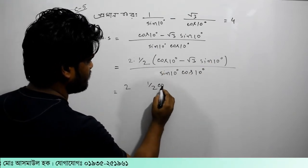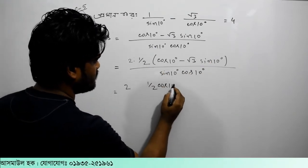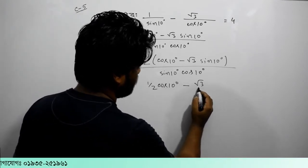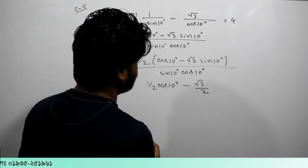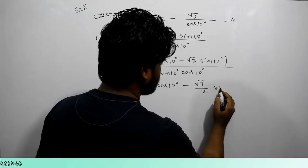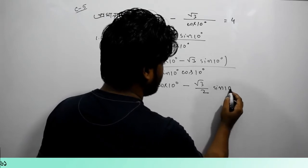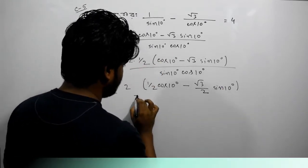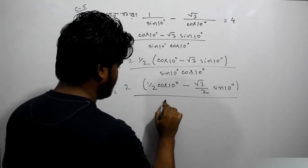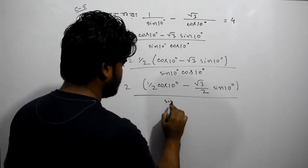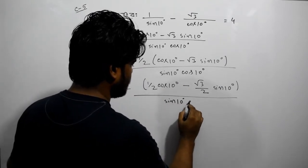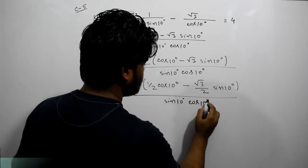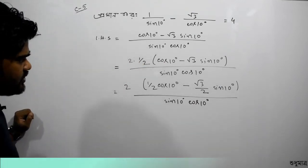Half cos minus root over 3, 2 sin. This plus sin, minus root and sin, sin, cos, x, 10. That's right.